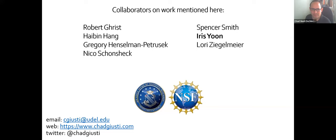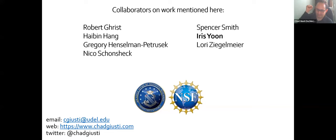The co-authors on this particular paper are Rob Grice and Iris Yoon. Iris is a postdoc who is now at Oxford and is absolutely fantastic — if you're looking to hire somebody, please hire Iris. Greg Hyben and Lori are working with me on a software project underlying the computation side. Spencer is a lab neuroscientist who provided data, and Nico is my current postdoc. Funding came from the Air Force Office of Scientific Research and NSF.